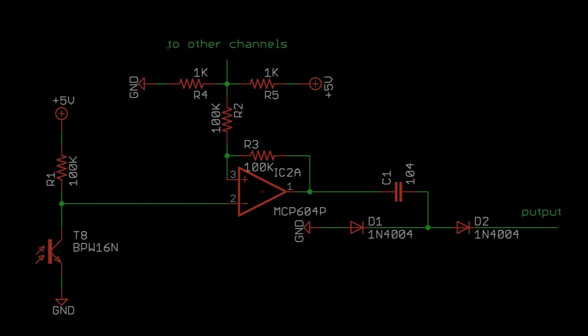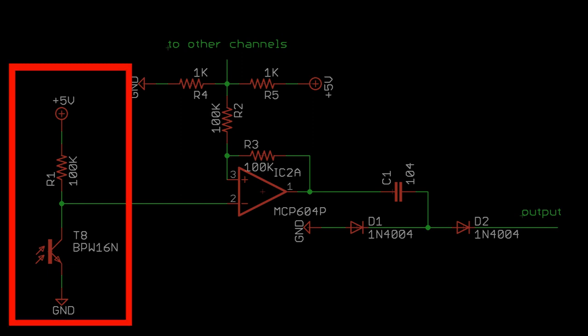Now let's look at the circuit that produces the trigger pulse. Light shines on the phototransistor, which pulls the negative input of the op-amp near ground.